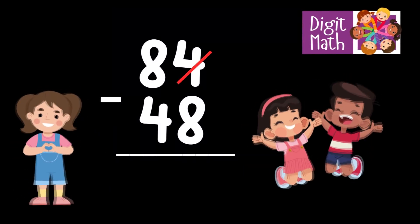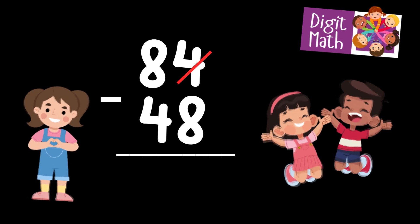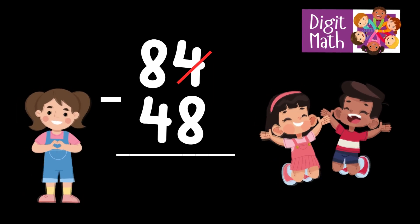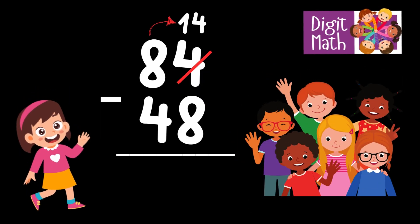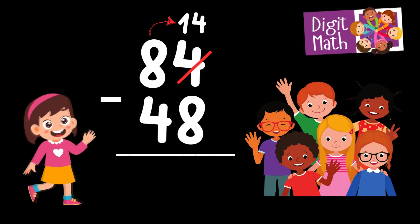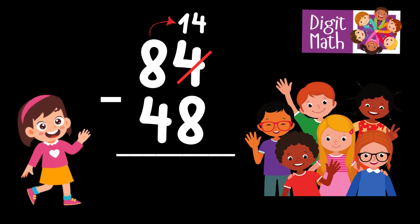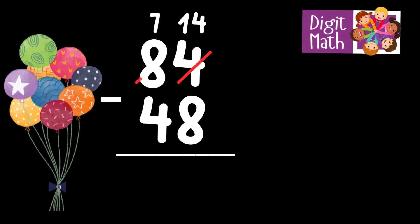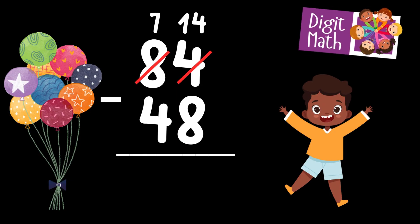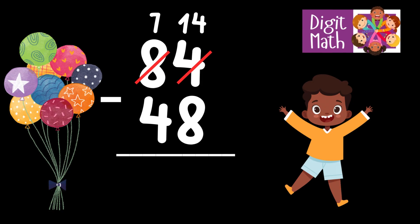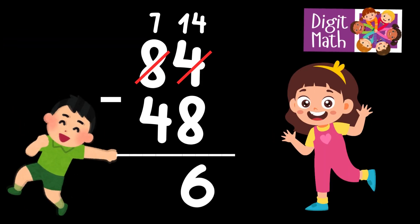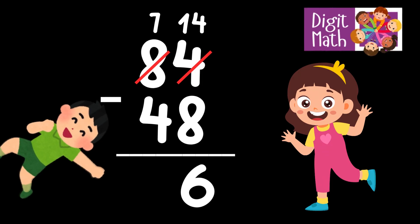In the Units column, we have 4 minus 8, which requires borrowing from the Tens column. In the Tens column, we have 8. We borrow 1 from the Tens, which leaves 7 in the Tens column and turns the Units column into 14. Subtracting 8 from 14 in the Units column gives us 6. In the Tens column, we have 7. Subtracting 4 from 7 gives us 3. Therefore, 84 minus 48 equals 36.